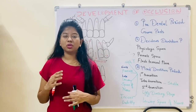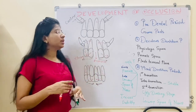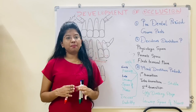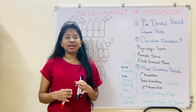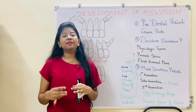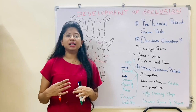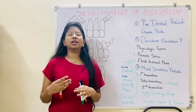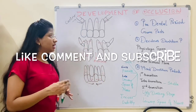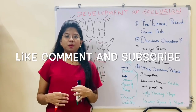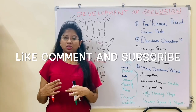In this orthodontics video we covered primate space, flush terminal plane, early and late shift, leeway space of Nance, incisor liability, and the ugly duckling stage. Many MCQs are asked on this topic — go through them and practice. If you have any doubts, write in the comment box or email at jkdentist@gmail.com. Thank you so much.